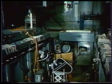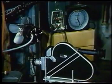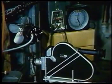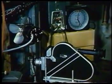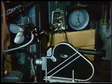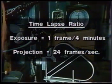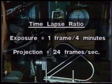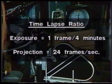To observe this slow process, a time-lapse motion picture camera was used. One frame was exposed every four minutes. A flash unit was synchronized with each exposure to illuminate the specimen. When projected at normal speed — 24 frames per second — the activity of several weeks is seen in several minutes.